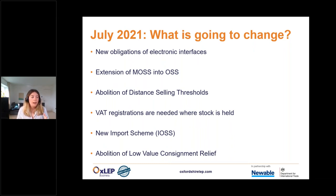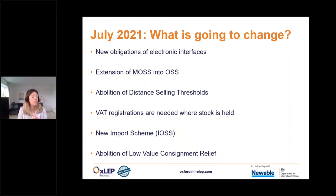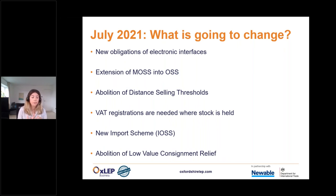This is a huge simplification — because it's getting rid of those distance selling thresholds where you're selling cross-border up until set thresholds, at which point you'd have to VAT register in each of those individual countries. They're replacing it with just one simplified report that you file to one tax authority, and they split the money amongst themselves. For any goods stored in the EU, you're still going to need a local VAT registration where your stock is held — in that local registration you're going to account for any cross-border B2B transactions, since the OSS is only for B2C. You'll also be able to reclaim any import VAT through your local VAT return, and any domestic sales will also go on your local VAT return. The OSS is only for cross-border sales of goods.